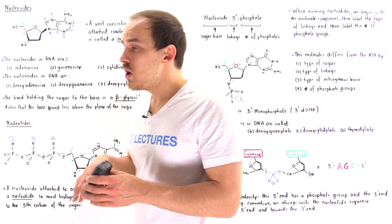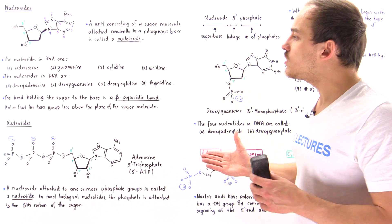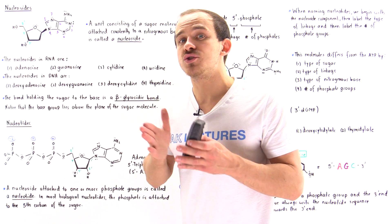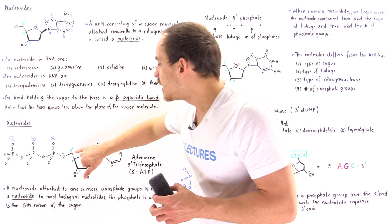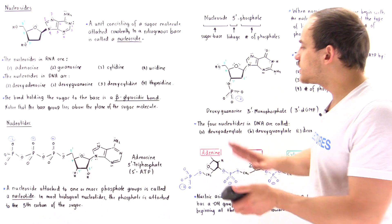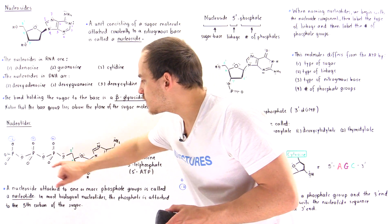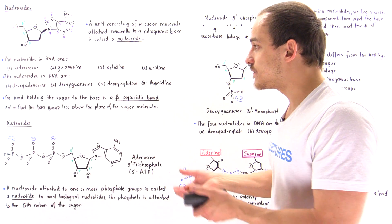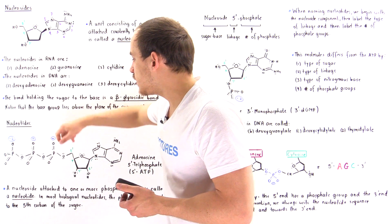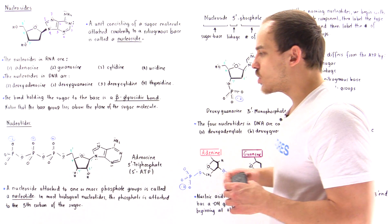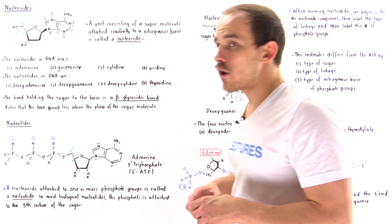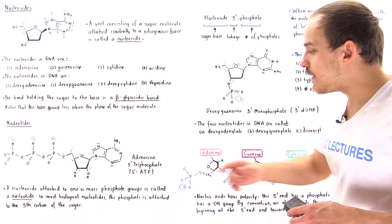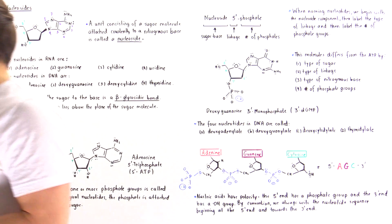Now let's move on to nucleotides. The only difference between a nucleoside and a nucleotide is that in nucleotides, we have the sugar and the base, as well as at least one of the phosphate groups attached to carbon number five on that sugar. Sometimes the phosphate group can also be attached to carbon number three, but usually in natural nucleotides found inside our body, the phosphate groups are attached onto carbon number five. So a nucleoside attached to one or more phosphate groups is called a nucleotide, and in most biological nucleotides, the phosphate group is attached to the fifth carbon on that sugar.